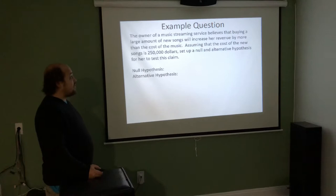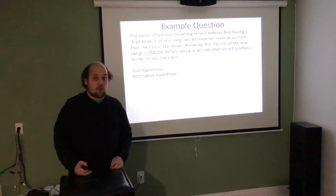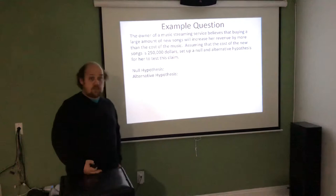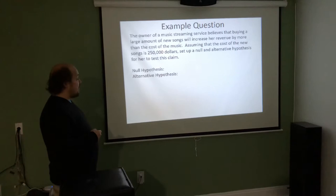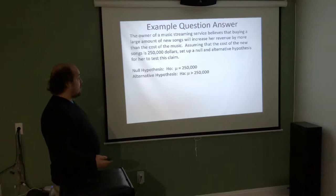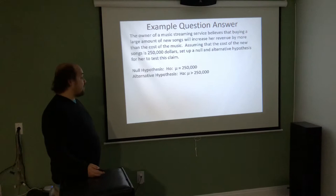For example: 'The owner of a music streaming service believes that buying a large amount of new songs will increase revenue by more than the cost of the music. Assuming the cost is $250,000, set up a null and alternative hypothesis.' The null hypothesis is H₀: μ = 250,000. The alternative hypothesis is HA: μ > 250,000 — that the revenue gained is greater than the cost.